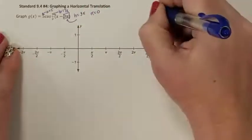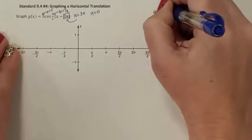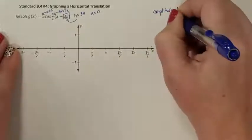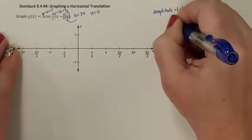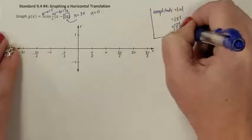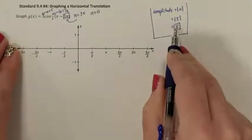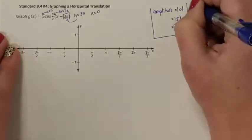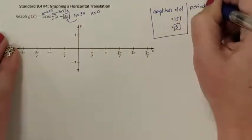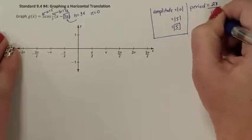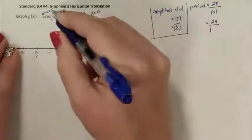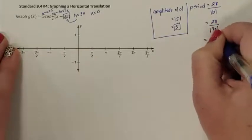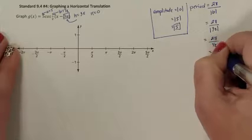To graph this, the first thing I need to find is my amplitude. Amplitude is the absolute value of A, which is the absolute value of 5, which is 5. That means when I find my midline, I need to be able to go up 5 from wherever that coordinate point happens to be. My period is 2 pi all over the absolute value of B — so 2 pi over the absolute value of one-half, which simplifies down to 4 pi.